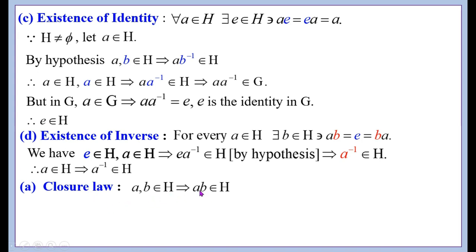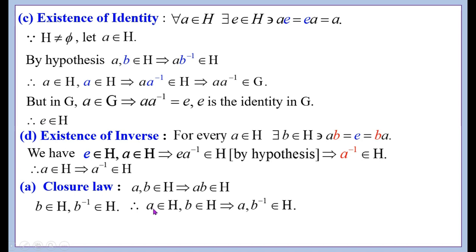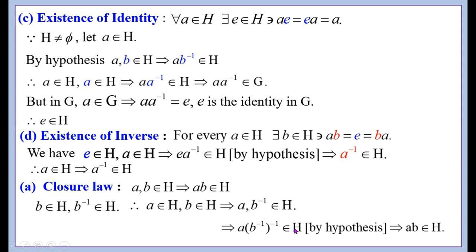The closure axiom: a, b ∈ H implies a·b ∈ H. Let b ∈ H. Since inverse exists for every element in H, b⁻¹ ∈ H. Therefore a ∈ H and b⁻¹ ∈ H. By hypothesis, a·(b⁻¹)⁻¹ ∈ H. Since (b⁻¹)⁻¹ = b, this implies a·b ∈ H. Thus a, b ∈ H implies a·b ∈ H.